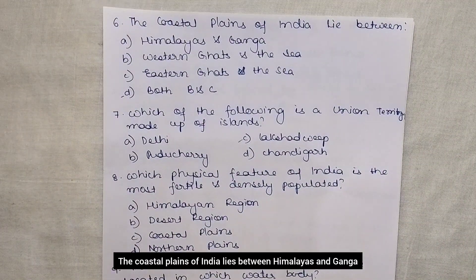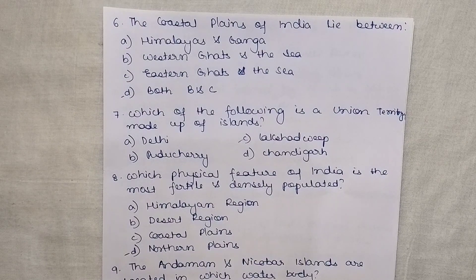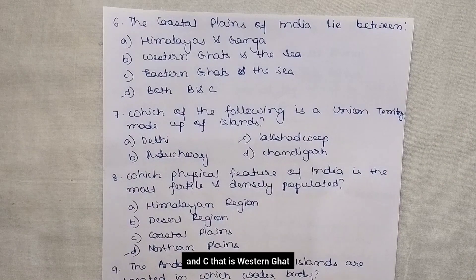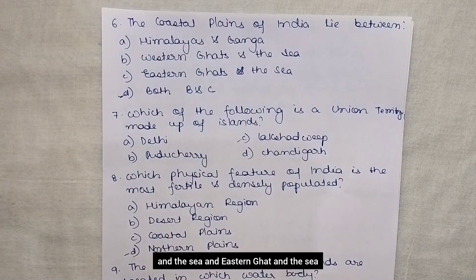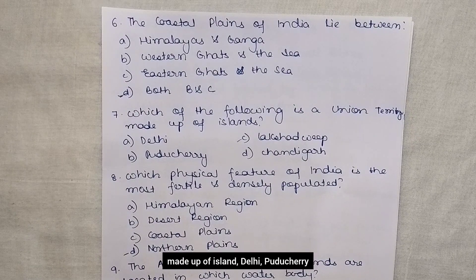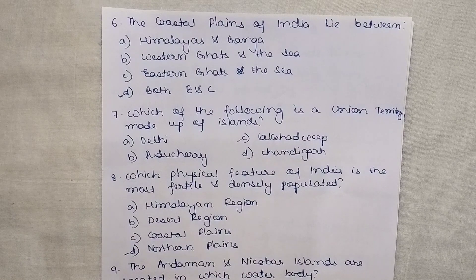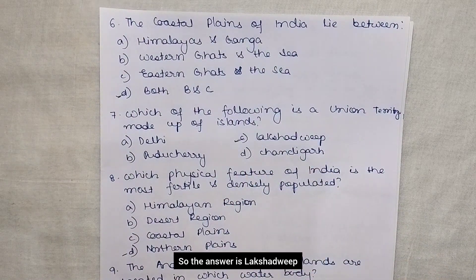The coastal plains of India lie between: Himalayas and Ganga, Western Ghat and the sea, Eastern Ghat and the sea, or both B and C — that is Western Ghat and the sea, and Eastern Ghat and the sea. The answer is both B and C. Next question: which of the following is a union territory made up of islands? Delhi, Puducherry, Lakshadweep, or Chandigarh. The answer is Lakshadweep.